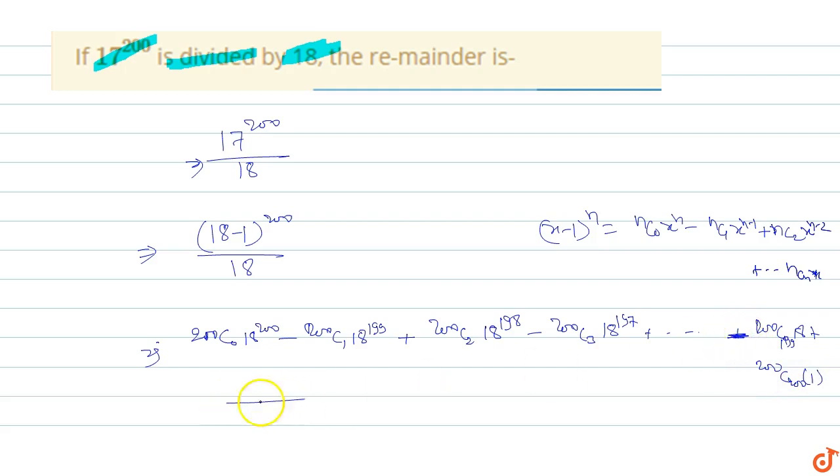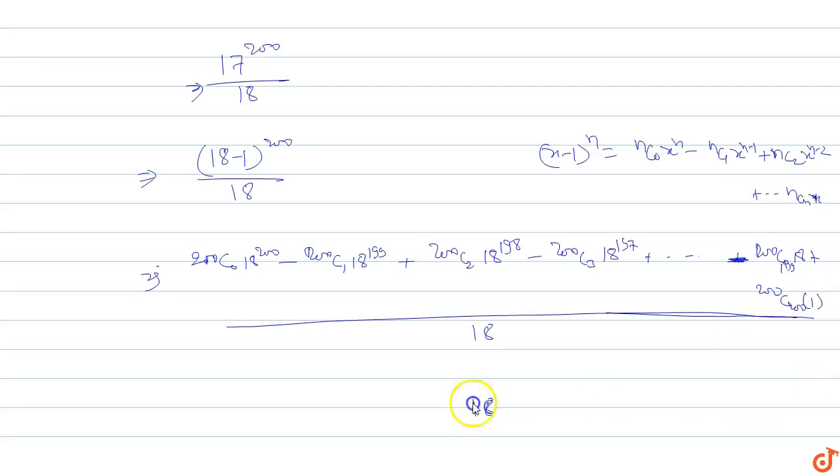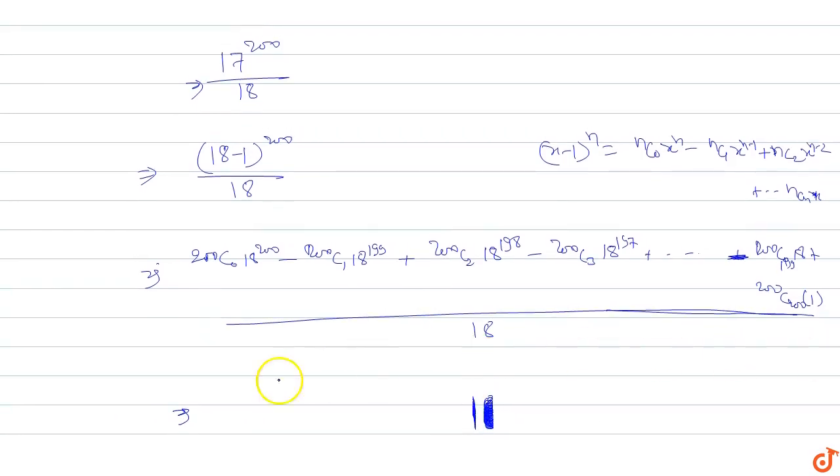Minus 1 upon... so divide by 18. We divide this by 18. When we divide by 18...